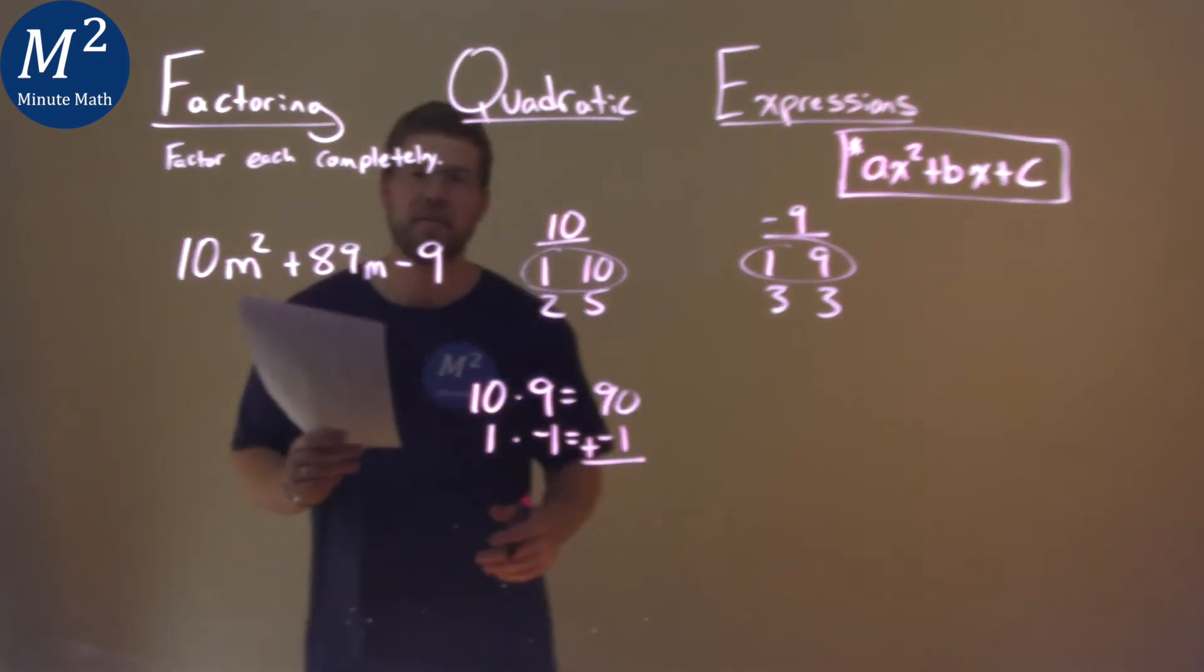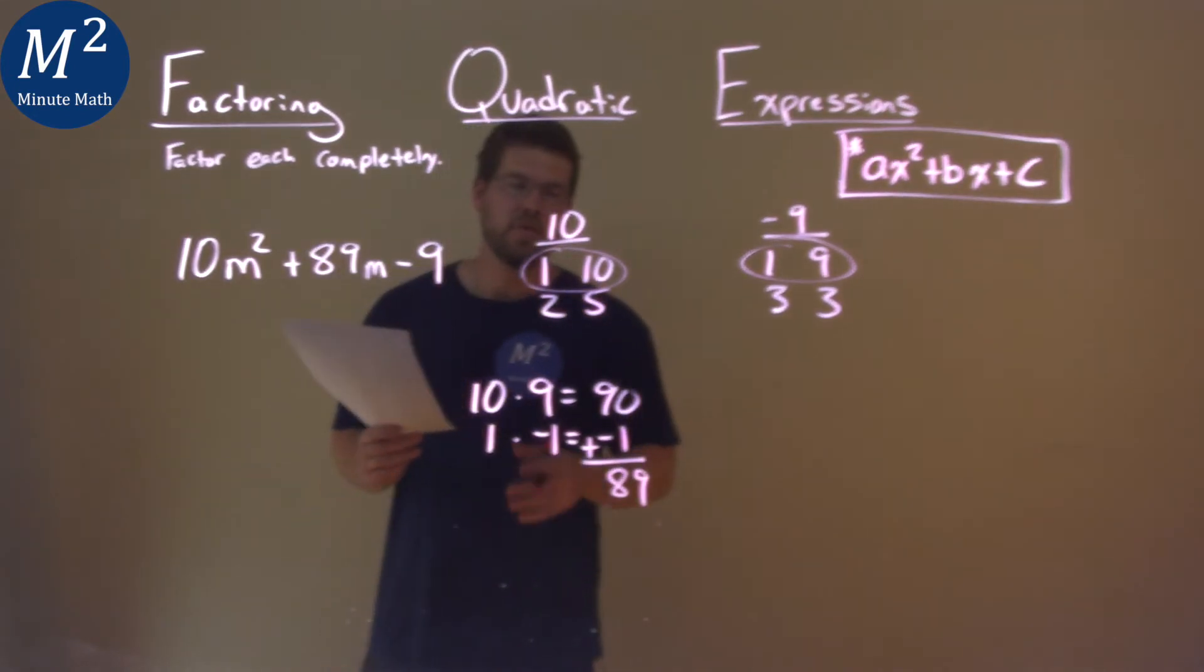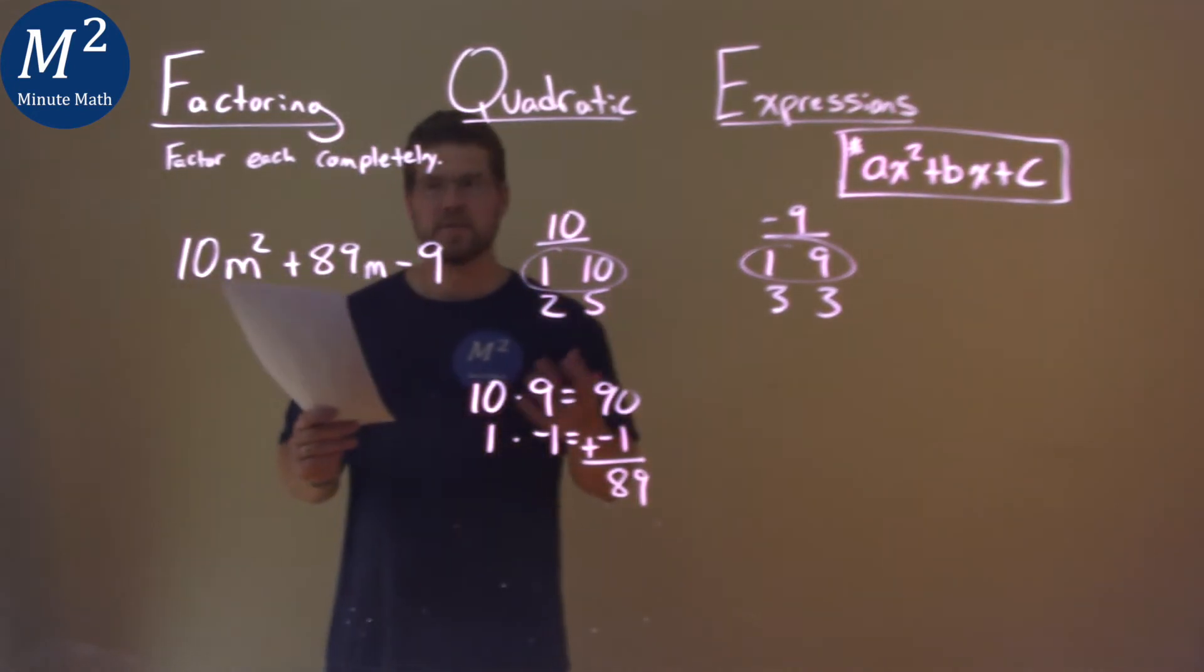We add the two together and we get it. 90 plus a negative 1 is 89. So making a smart guess, we got our pairs correctly.